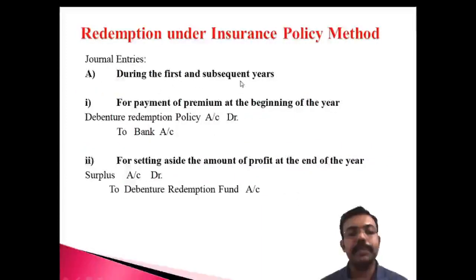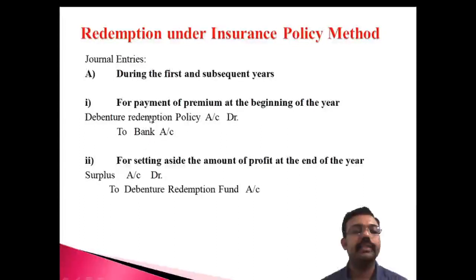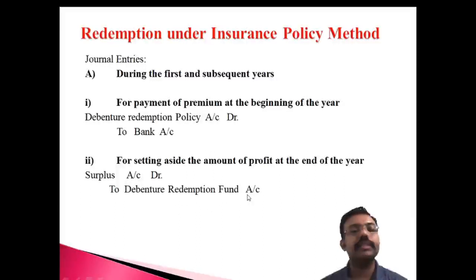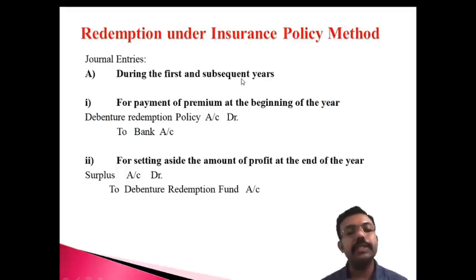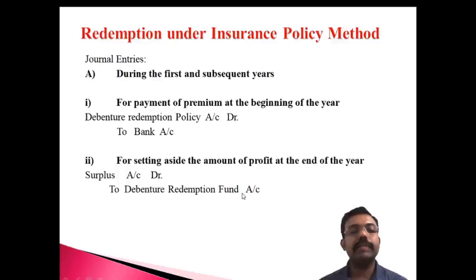For the first and subsequent years, there are two entries. First, for payment of the premium at the beginning of the year: Debenture Redemption Policy Account debit, Bank Account credit. Second, for setting aside the amount of profit at the end of the year: Surplus Account debit, Debenture Redemption Fund Account credit. These are the two entries for the first and subsequent years.